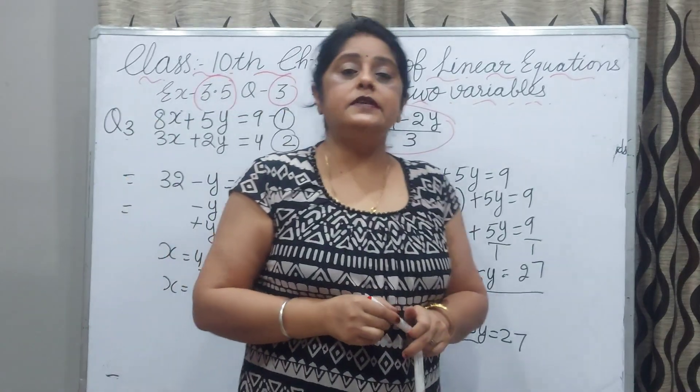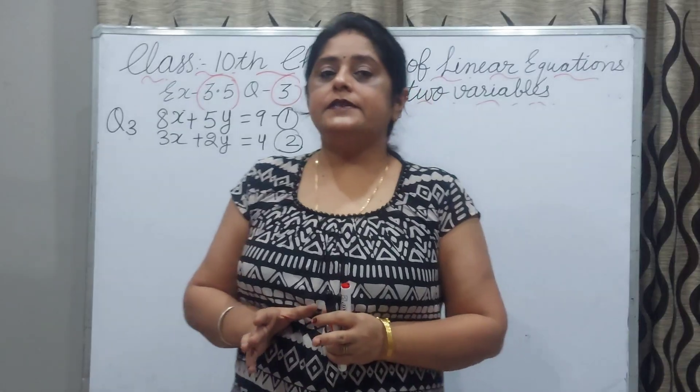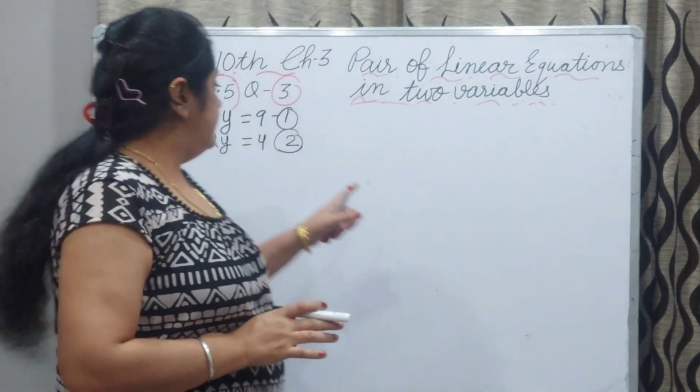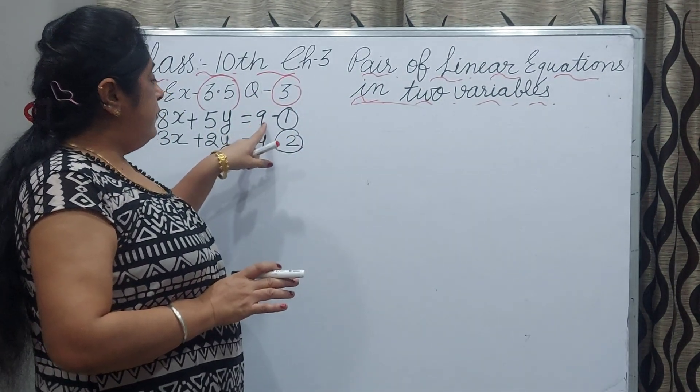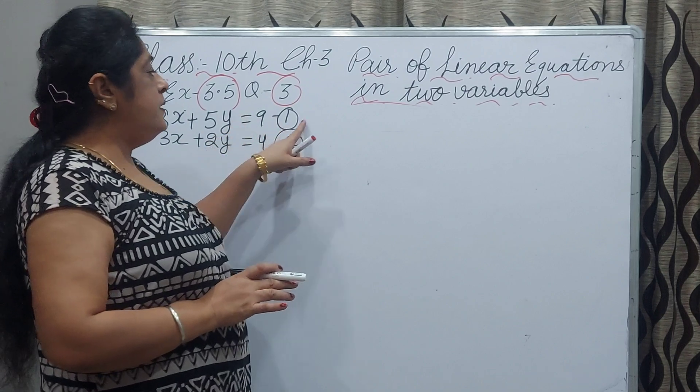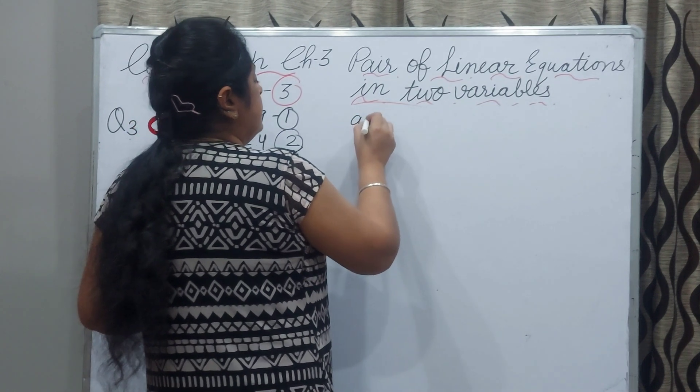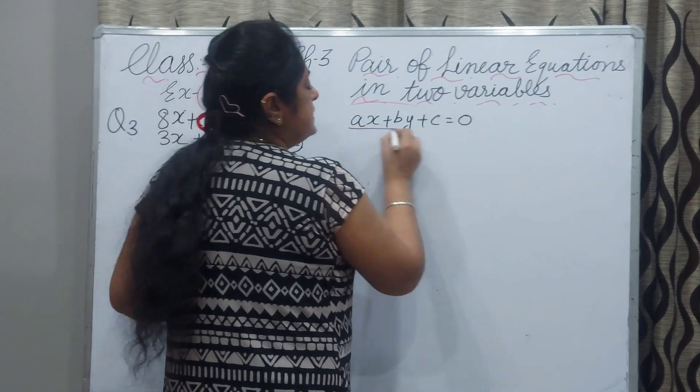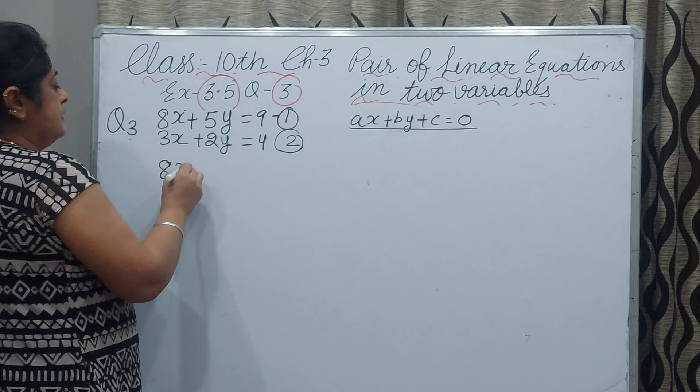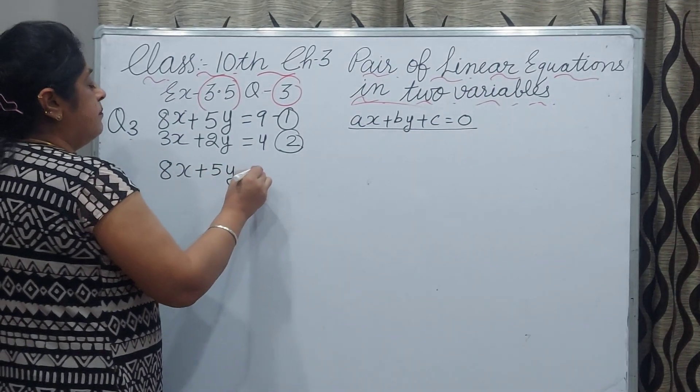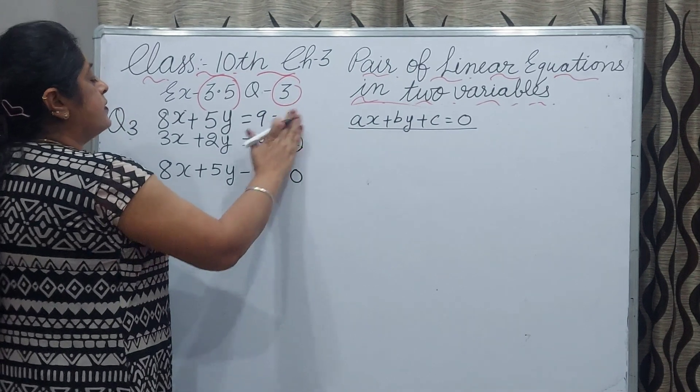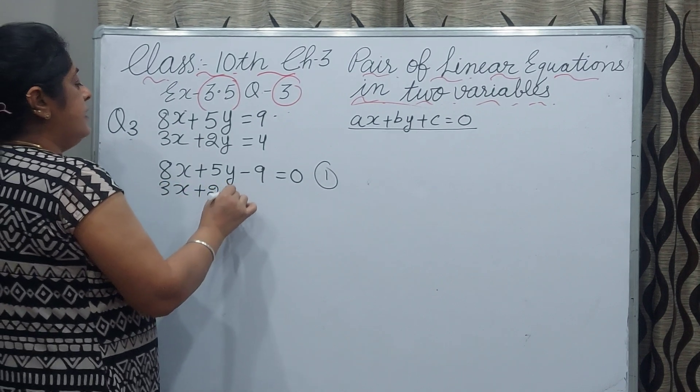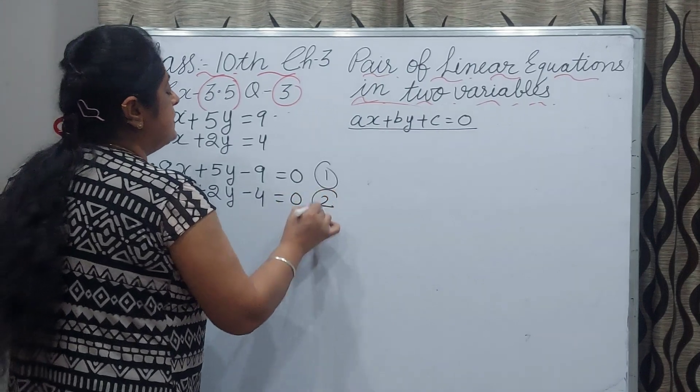Now we solve this sum by cross multiplication method. The statement is same but now we are using cross multiplication method. For cross multiplication method you have to put 9 in left hand side and there should be 0. We have to write 8x plus 5y minus 9 equals 0. This is equation 1 and 3x plus 2y minus 4 equals 0, that is equation number 2.